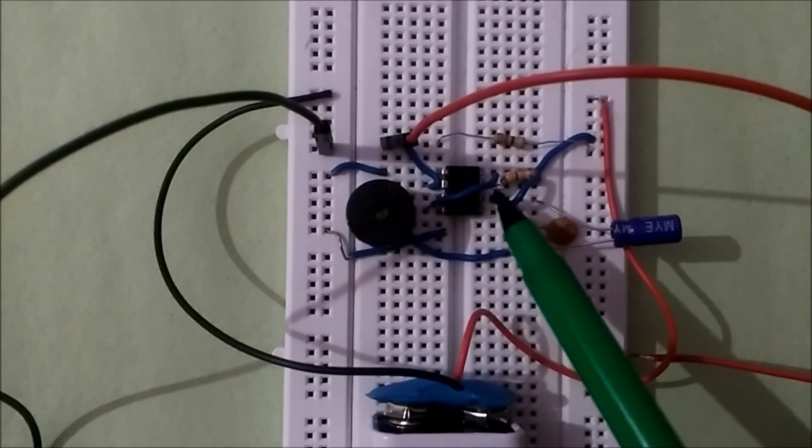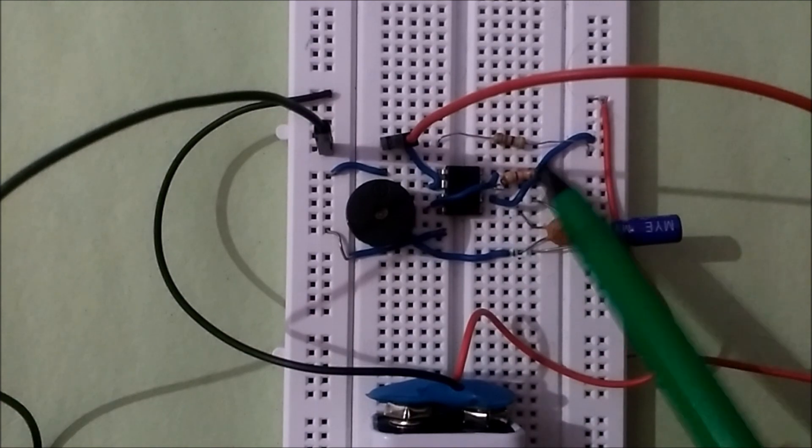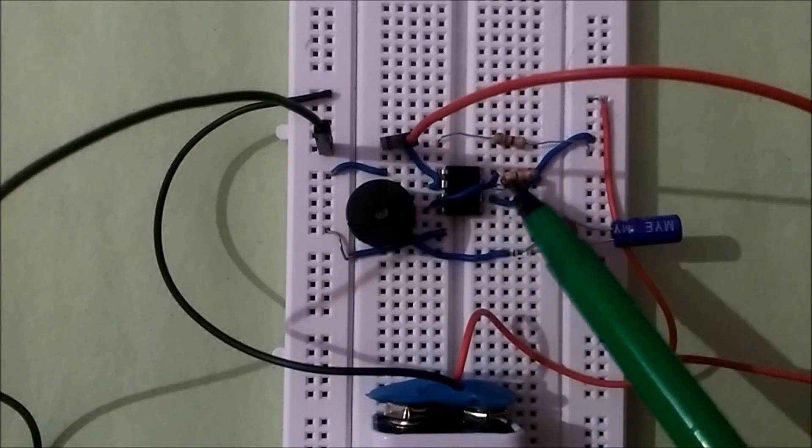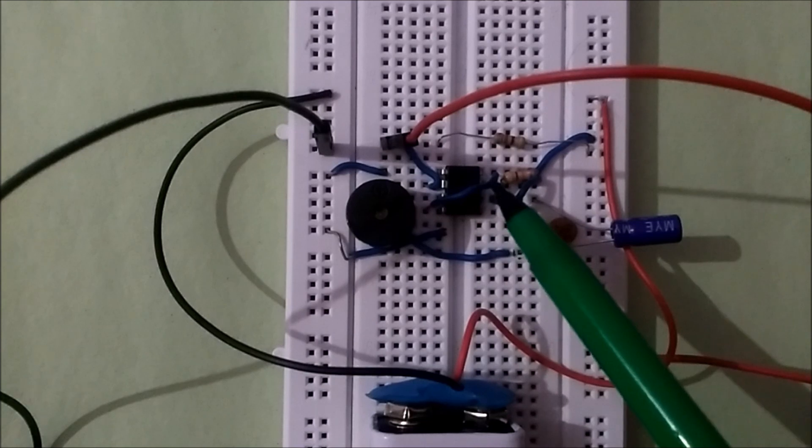Now a 47k resistor is connected between discharge pin and plus VCC, whereas VCC is directly connected to your 8th pin. So you can say pin 8 is directly connected through a 47k resistor to your 7th pin.